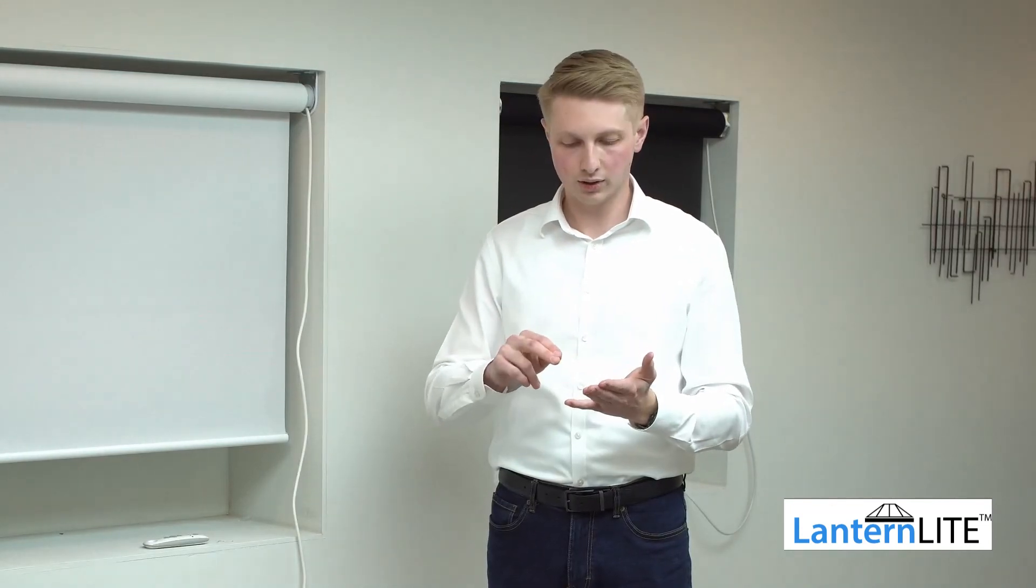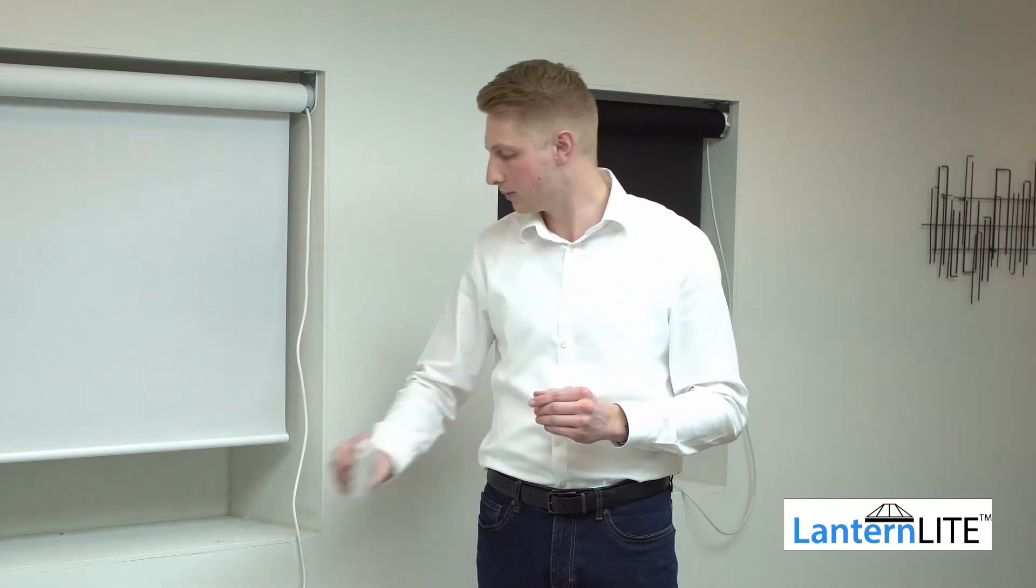We recommend doing the whole programming procedure in one hit. So this is right from pairing the remote control to changing or checking the turning direction, setting the top limit, setting the bottom limit and then pressing the programming button once on the back to confirm that all those changes have been made and saved. If you decide not to do that and if you decide to only do part of the procedure and then make some changes to perhaps the way the blind is fitted before you do the rest of the procedure, you're likely to run into problems.